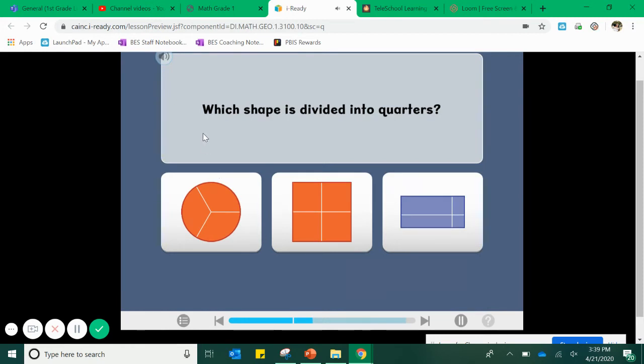Here's our question. Which shape is divided into quarters? Well, we have a circle, a square, and a rectangle. When I look at my circle, I notice that it is partitioned or divided or cut into equal parts. But I only see one, two, three equal parts. That's not quarters or fourths. Those are what we call thirds. That makes sense, though, doesn't it, friends, that a shape broken up into three parts? Each piece would be called a third. We'll worry about that in second grade.